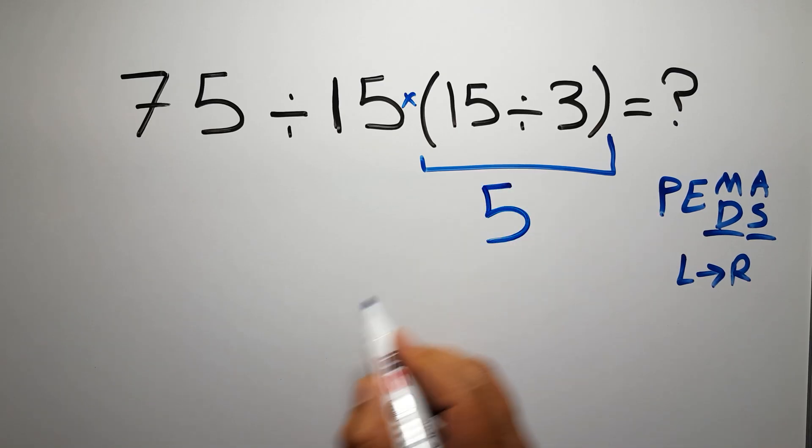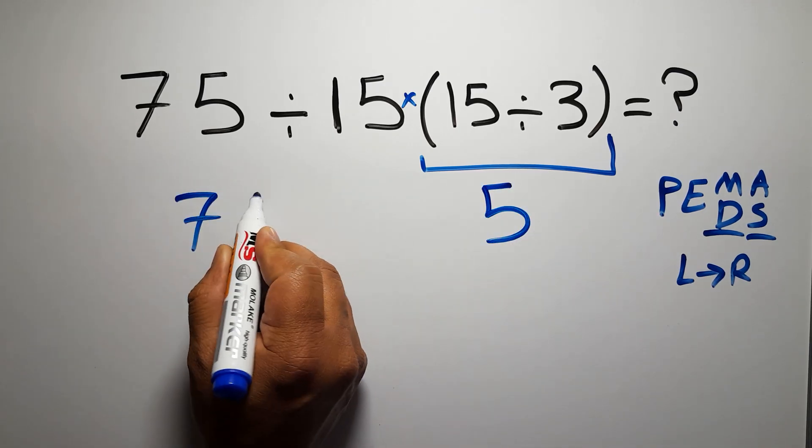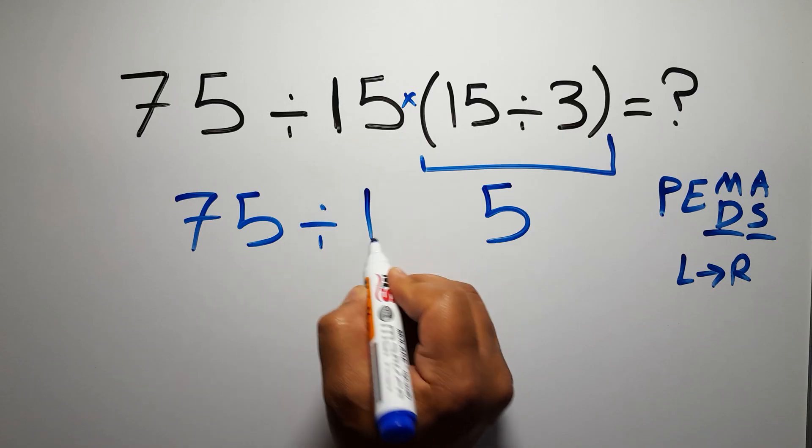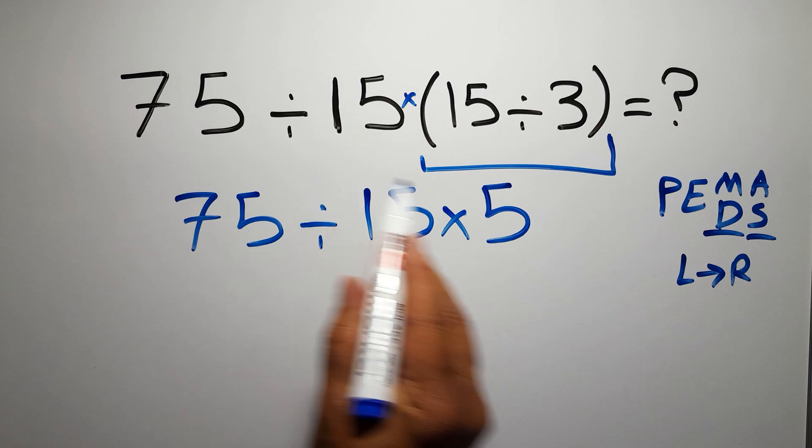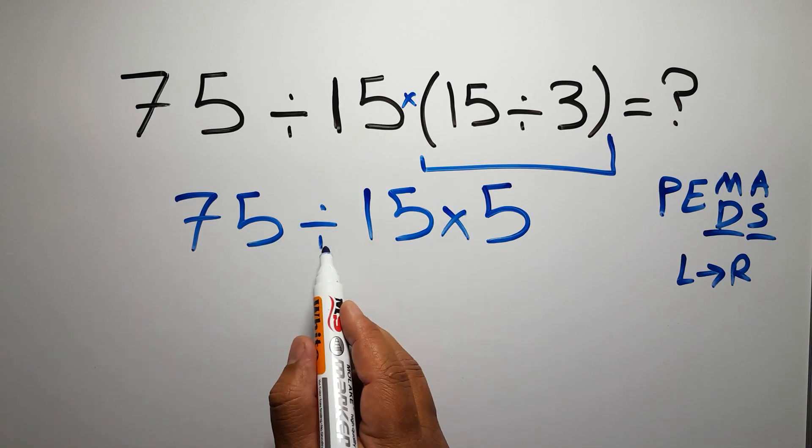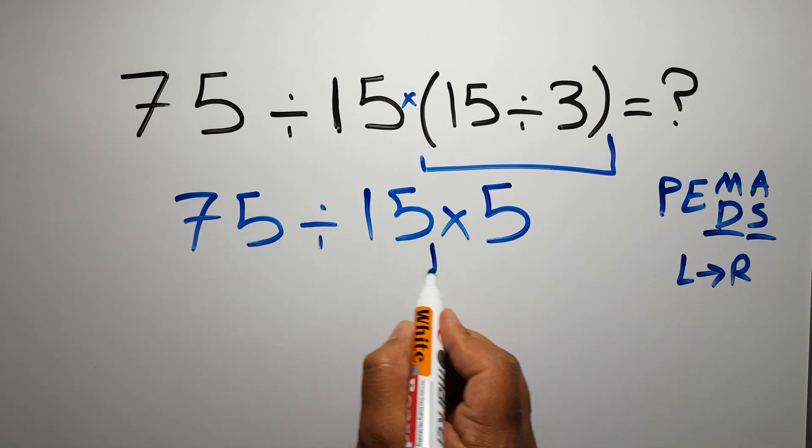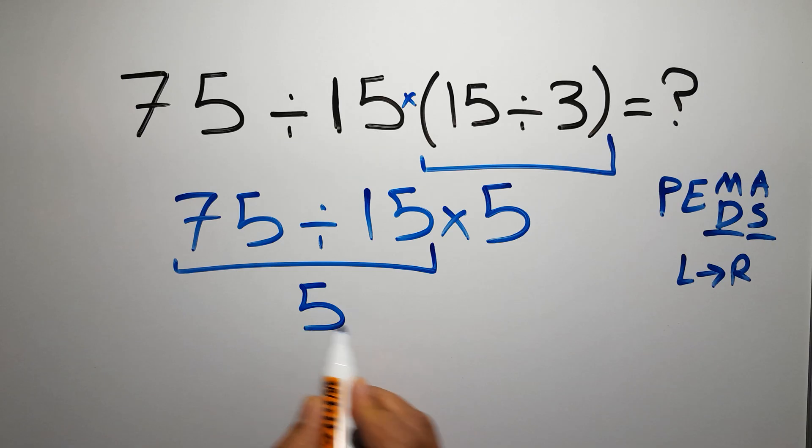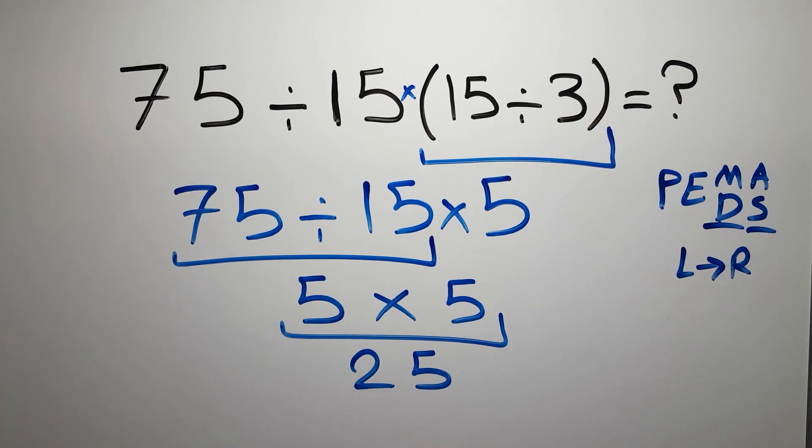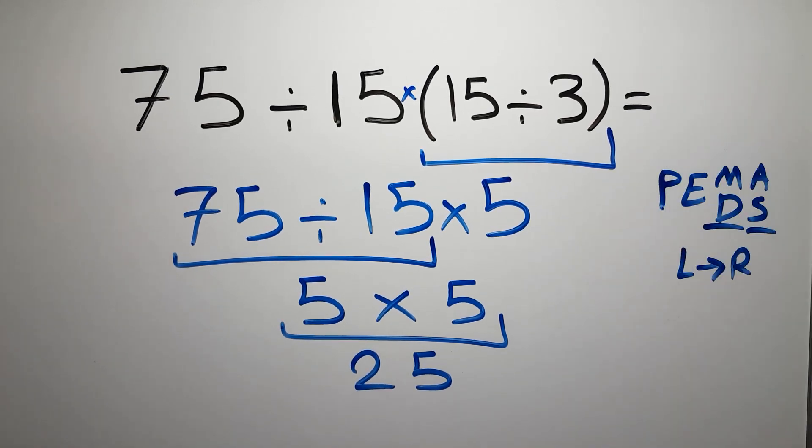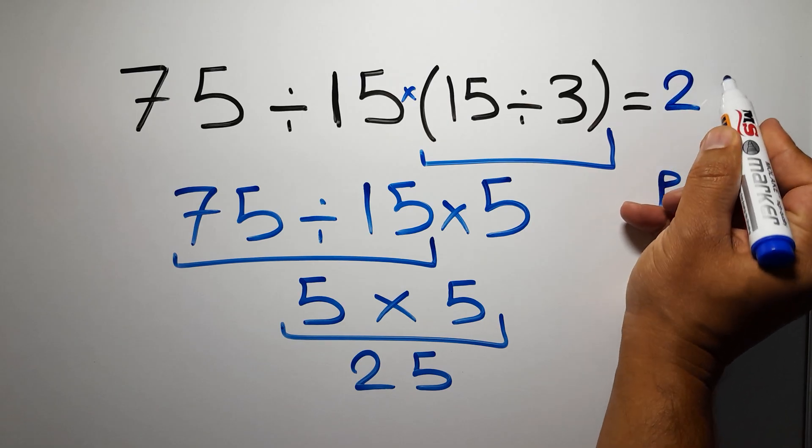Okay, so 75 divided by 15, then times 5. Now we have to work from left to right. 75 divided by 15 gives us 5, and 5 times 5 is just 25. This is our final answer to this problem. The correct answer is 25.